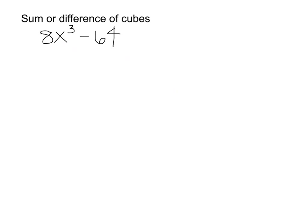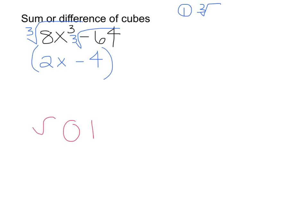Now we are going to look at sum or difference of cubes — this is the brand new part of today's lesson. Whenever you are given something cubed, you take the cube root, just like when you're given something squared, you take the square root. The cube root of 8x cubed leaves you with 2x. The cube root of negative 64 gives you minus 4 — meaning negative 4 times negative 4 times negative 4 gives you negative 64. After finding the cube roots, you must use a method called SOPS to get the second factor.